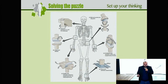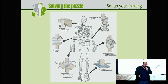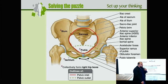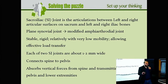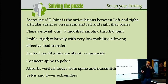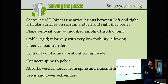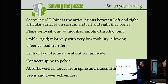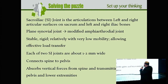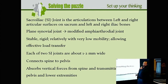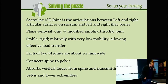Group B says there is mobility, but it is minimal. So the sacroiliac joint must have some kind of mobility, but it's minimal. Group A then asks: if it's minimal, how are we going to assess it? The sacroiliac joint is an articulation between the sacrum and left and right iliac bones — a plain synovial joint, modified amphiarthrodial, stable, rigid, with very low mobility.